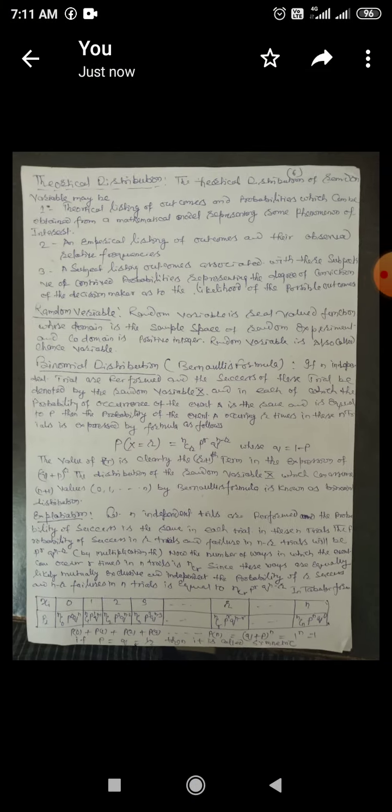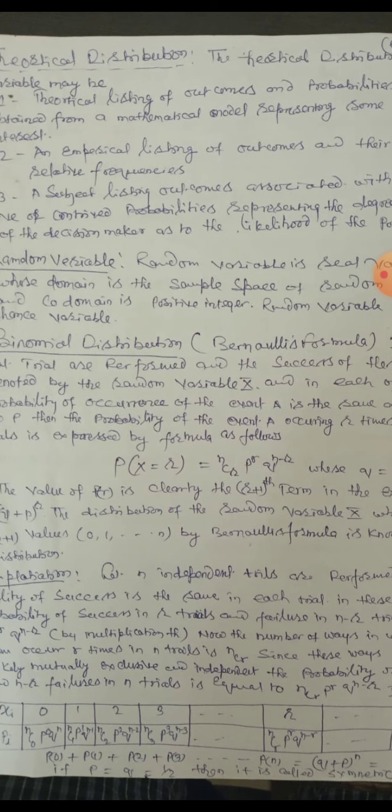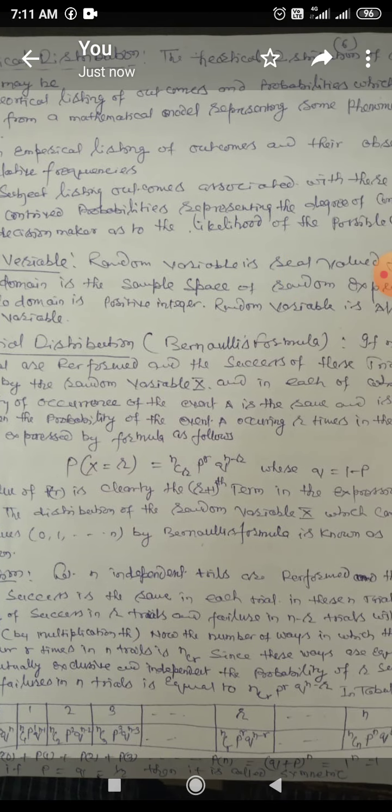Success plus failure, the probability of success plus failure will be 1. The value of P is clearly the R+1 term in the expansion of (Q + P)^N. The distribution of random variable X, which can assume N+1 values, that is 0, 1, 2, ..., N by Bernoulli formula is known as the binomial distribution.